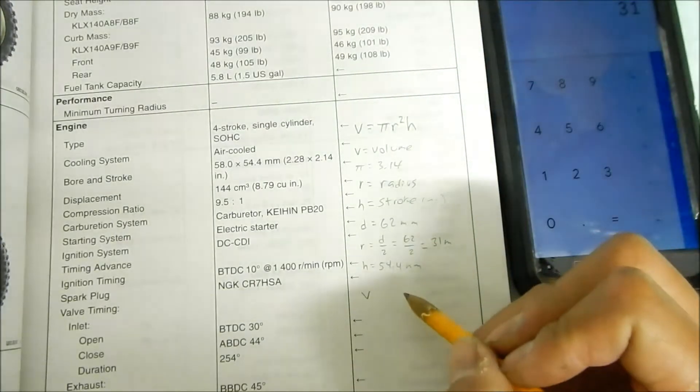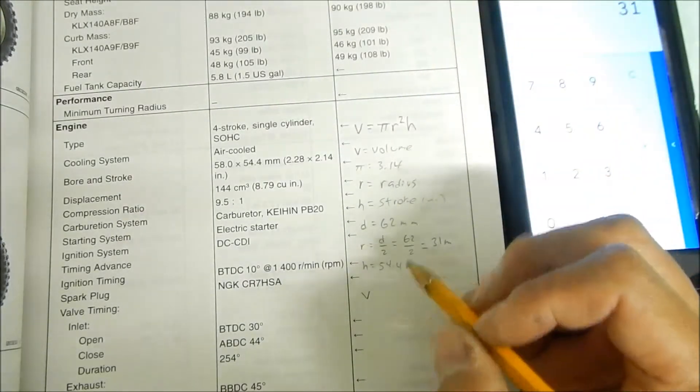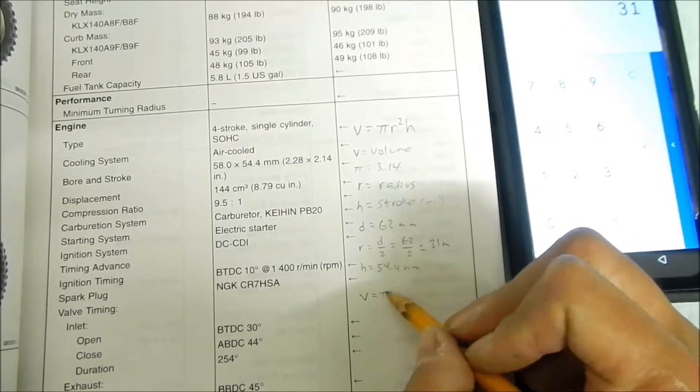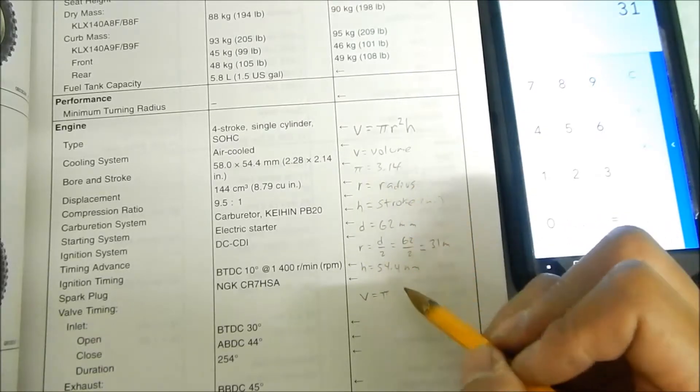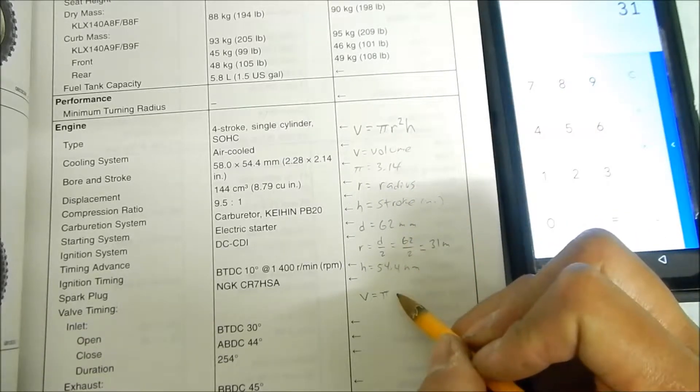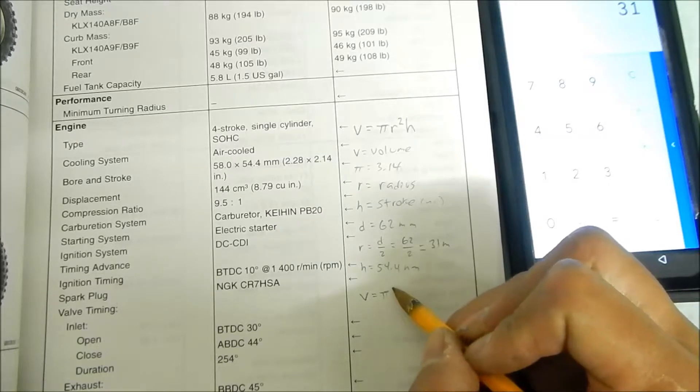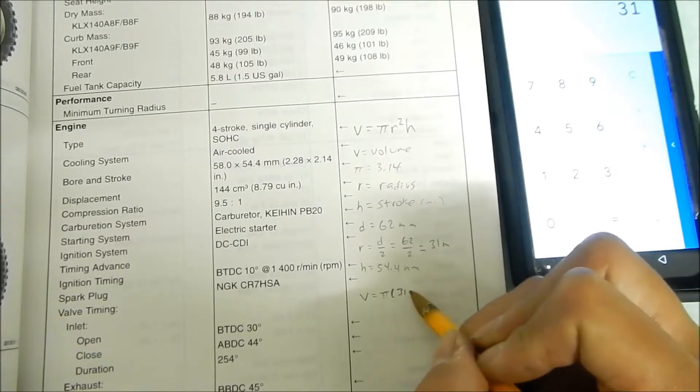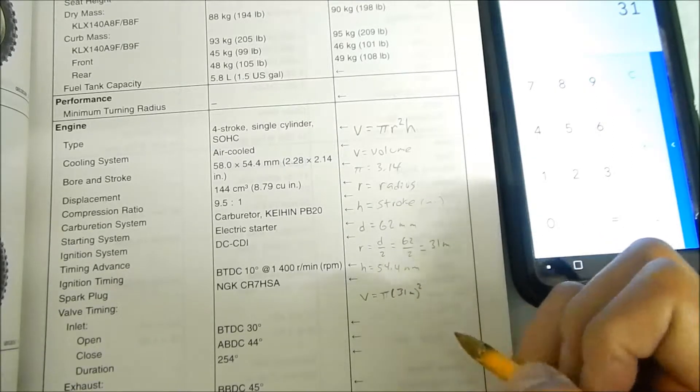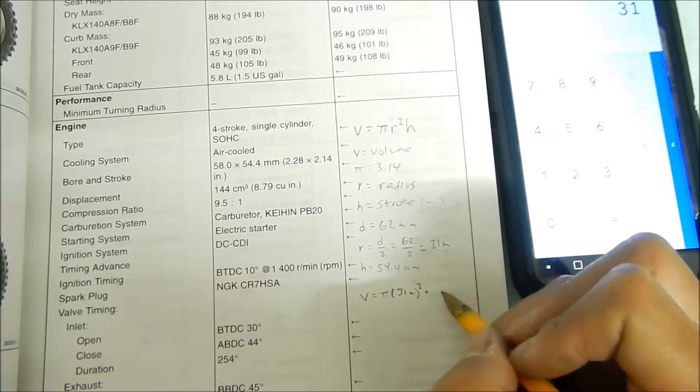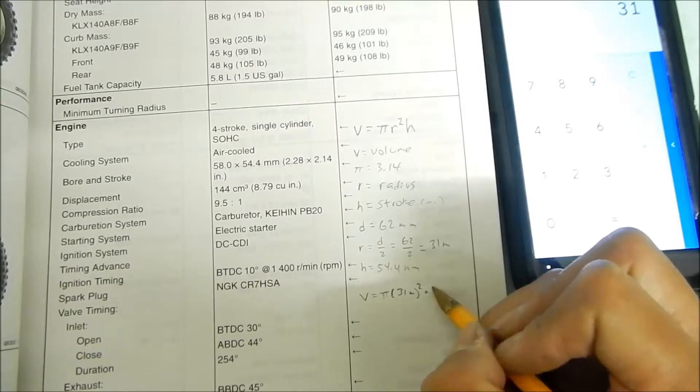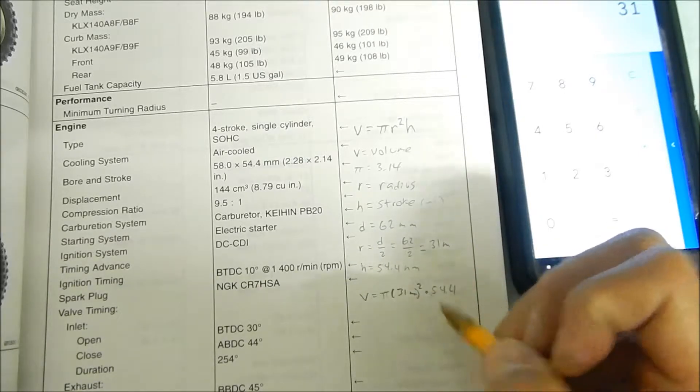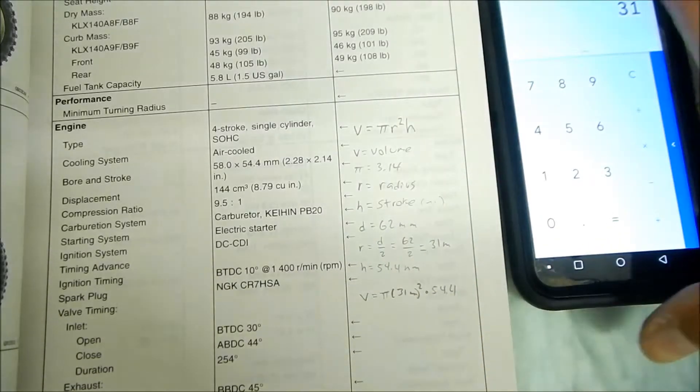So volume equals, we're trying to find V, so pi which is 3.14, we said we'll plug it in later. R, let's put a parenthesis, r is 31 millimeters squared times your stroke, the height, 54.4, millimeters not meters.